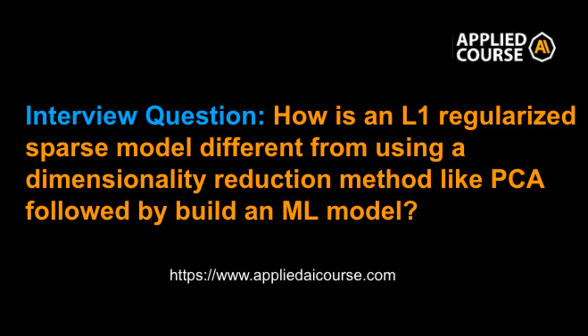On the other hand, when you apply L1 regularization with a larger value of lambda, only those features which are useless to your classification task will have their feature weights go to zero. As you slowly increase the value of lambda, more and more useless features will go to zero. This means when taking the L1 regularization approach and tuning lambda, you are actually finding the optimal value of lambda and the minimum number of feature weights that will be retained while also maximizing your model performance.